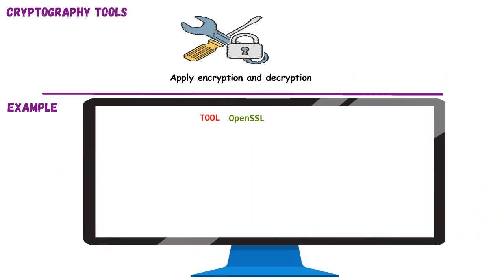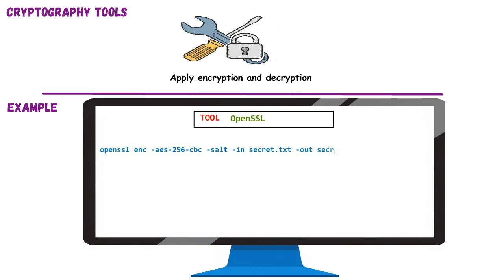We'll use OpenSSL, a widely adopted command-line tool for encryption and key generation. We encrypt a sensitive text file using strong symmetric encryption with a passphrase-based key. The output prompts us to enter and confirm a password, which encrypts the file securely. Attackers may try to crack such encrypted files if keys are weak. Defenders rely on these tools to protect data at rest or in motion. Cryptography tools are essential to implement theory and bring secure practices into real-world operations.